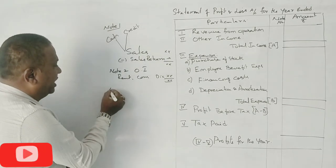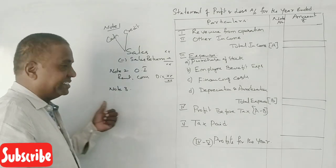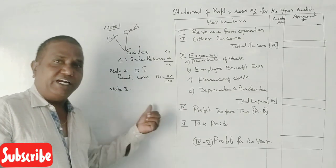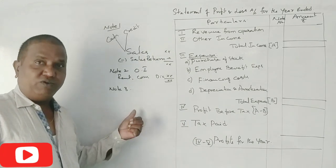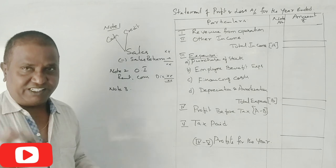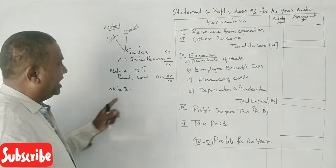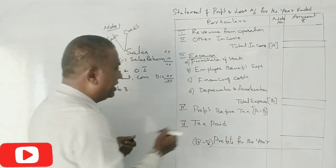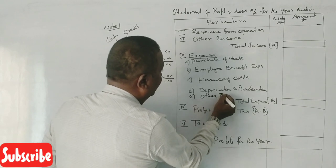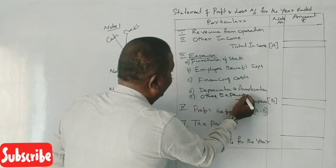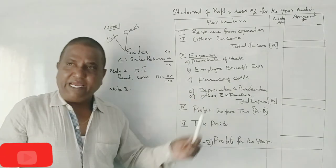Note Number 3: Purchases — Cash Purchases and Credit Purchases, giving a Total. Then subtract Purchase Returns, that is Return Outwards. The net figure gives us the Purchases amount. Clear?